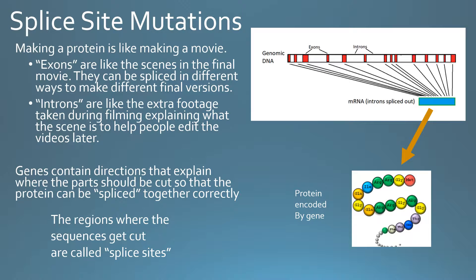You splice all of the exons together to make the final sequence, which then gets turned into a protein. You can think about it as the way a movie is produced.